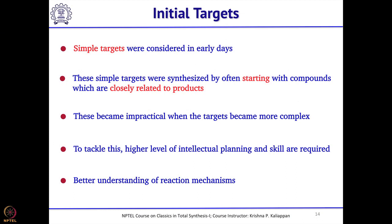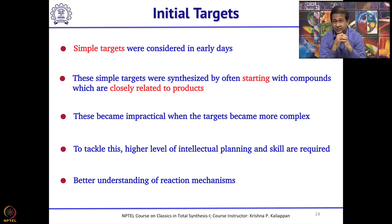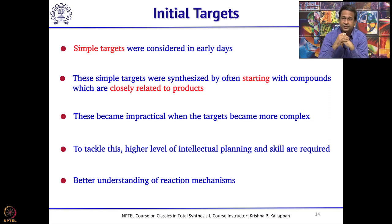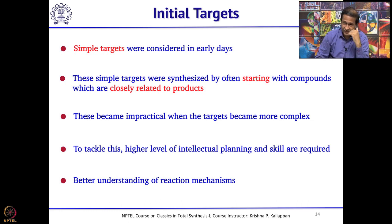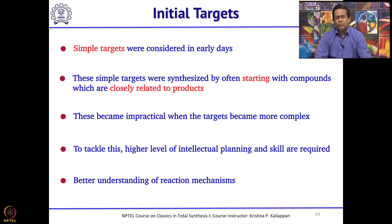That is a brief history of total synthesis. Initially, synthetic chemists started with simple targets, because one should remember that when they started there was no NMR, no IR, no UV — all these spectroscopic techniques came much later. So it was not easy to choose complex molecules; they always chose simple target molecules that were very close to the starting materials they used, making it easier to confirm whether they had made the compound.